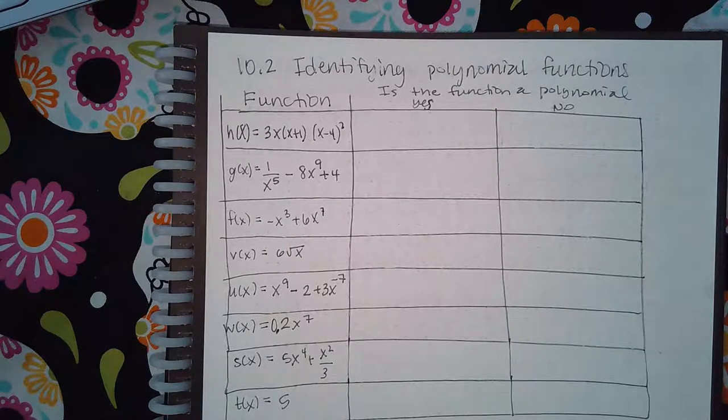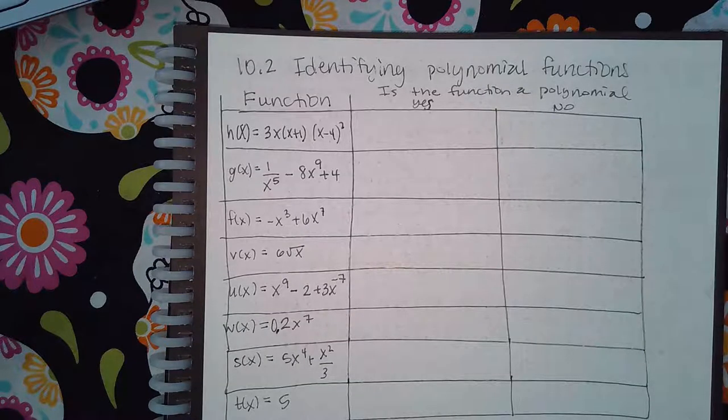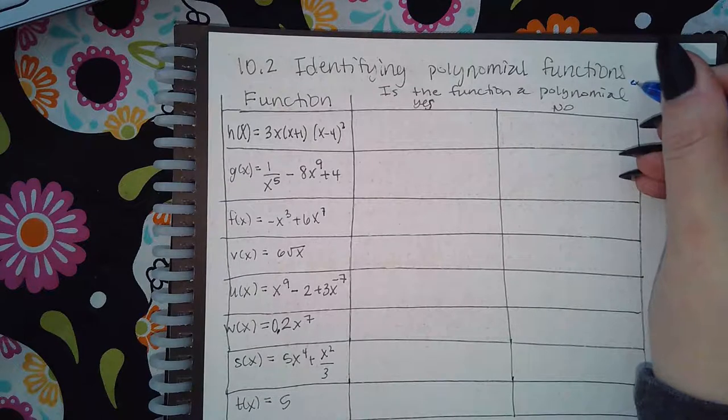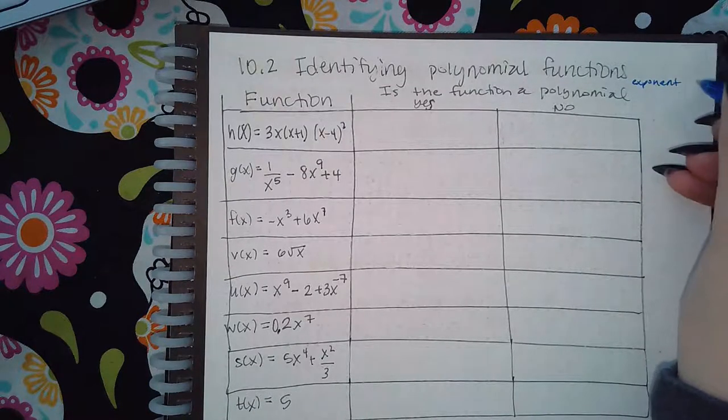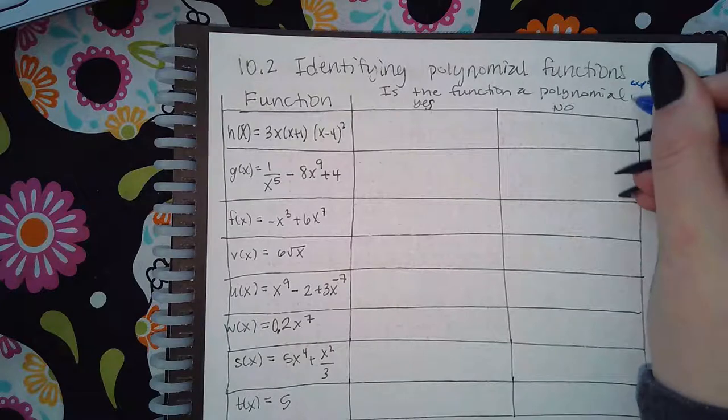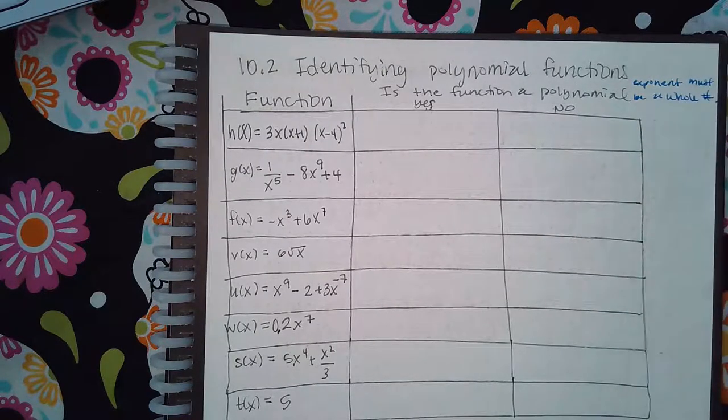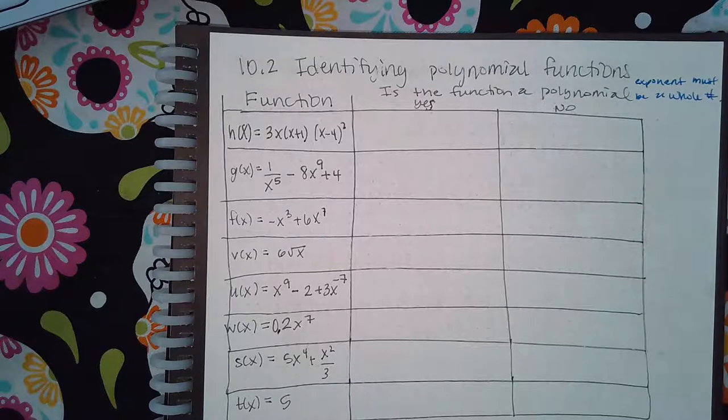But not even that, it can't even be whole numbers because whole numbers usually start at one and no, that's natural numbers. Natural numbers start at one because natural numbers are like counting numbers and they start one, two, three, four. Whole numbers do start at zero. So for it to be a polynomial, your exponent must be a whole number. That means no fractions and no negatives.